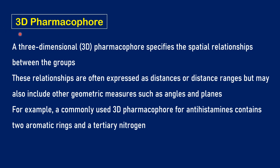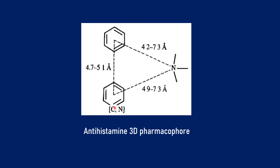The term 3D pharmacophore specifies the spatial relationships between chemical groups in three-dimensional space. These relationships are expressed as distances or distance ranges, and can also include other geometric properties such as angles and planes. For example, the 3D pharmacophore for antihistamines contains two aromatic rings and a tertiary nitrogen, connected at defined distances in angstroms — giving a picture of the three-dimensional space between these moieties responsible for activity.